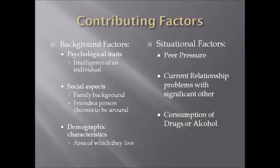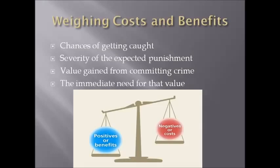When considering whether to commit a crime, the individual will weigh the costs and benefits, usually in a quick fashion. Factors considered include: chances of getting caught, severity of the expected punishment, value gained from committing the crime, and immediate need for that value. If the likelihood of getting caught seems low, the punishment not severe, the gain minimal, or the need not urgent, the person is likely not to commit the crime. If the opposite is true, they are rationally likely to commit the crime.